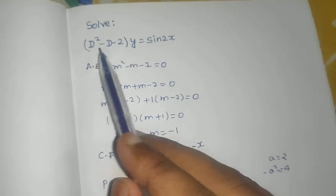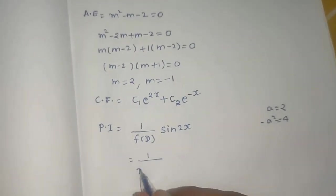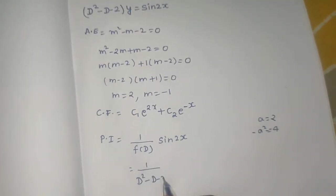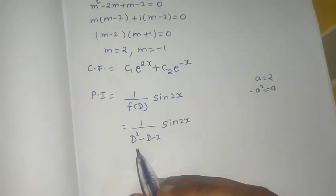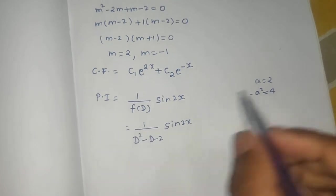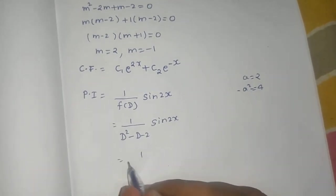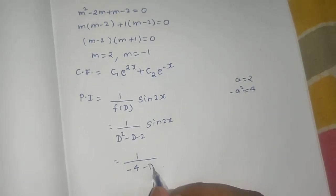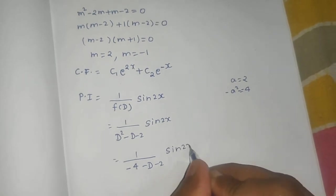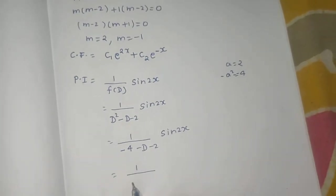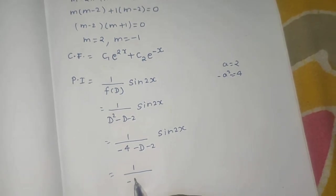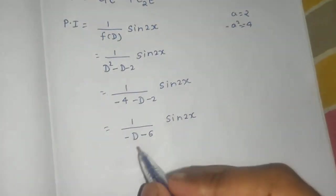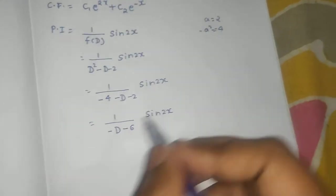Since f(D) is D² - D - 2, we have 1/(D² - D - 2) operating on sin(2x). Replacing D² with -4, this becomes 1/(-4 - D - 2) operating on sin(2x), which simplifies to 1/(-D - 6) operating on sin(2x).